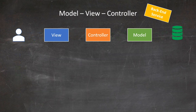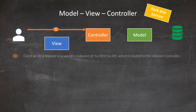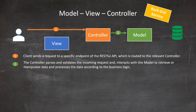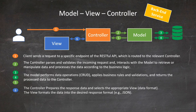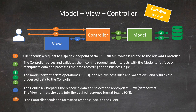With backend services, the users — or other applications or services — send requests to an endpoint of our service which are routed to the controller, without going through the view. The controller parses and validates the incoming request and interacts with the model to handle the received request. The model performs data operations, applies business rules and validations, and returns the processed data to the controller. The controller then works with the view to format the processed data in a desired response format before sending the response back to the client. So as you can see, the interactions between layers are slightly different, but the role and responsibility of each layer remains the same.